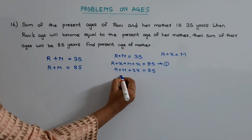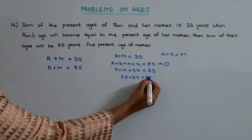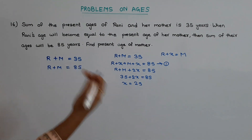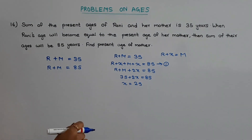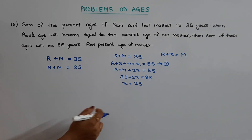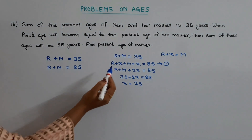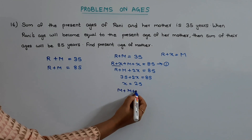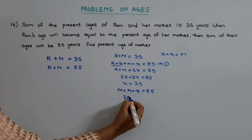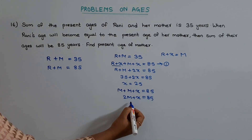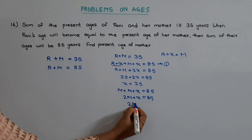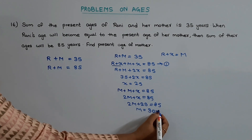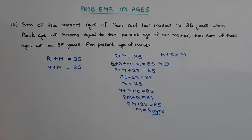We know that r plus m is 35, so substituting: 35 plus 2x equals 85, giving x equals 25. Now since r plus x equals m, substituting into the first equation: m plus m plus x equals 85, which gives 2m plus x equals 85. We know x equals 25, so 2m plus 25 equals 85, and solving this we get m equals 30 years. This is the conventional method to find out the present age of mother.